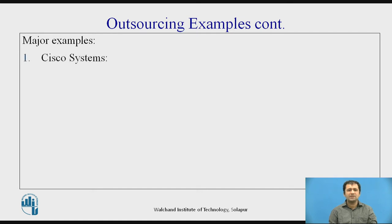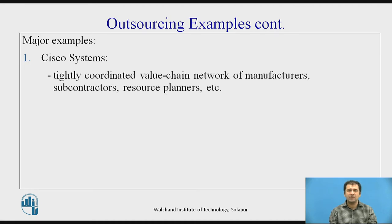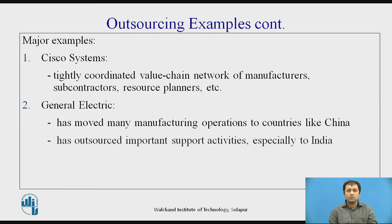Some other examples of outsourcing: Cisco Systems has a tightly coordinated value chain network of manufacturers, subcontractors, and resource planners, which is one of the biggest advantages of Cisco Systems. General Electric has moved many manufacturing operations to countries like China and has outsourced important support activities, especially to India. Within India, General Electric also does outsourcing activity domestically, for example from Bangalore to suppliers in Pune.